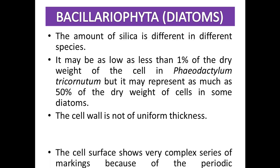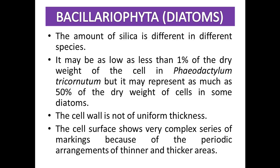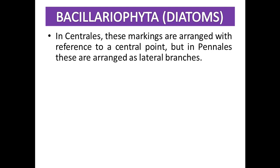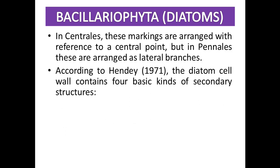The cell surface shows a very complex series of markings because of the periodic arrangement of thin and thick areas. In centric diatoms these markings are arranged around a central point, while in pennates they are arranged as bilateral branches. According to Hinder (1971), the diatom cell wall contains four basic kinds of secondary structures.